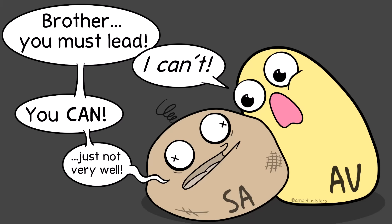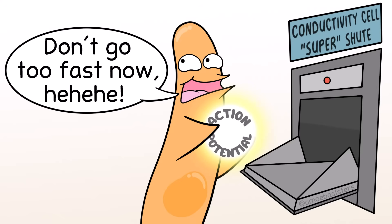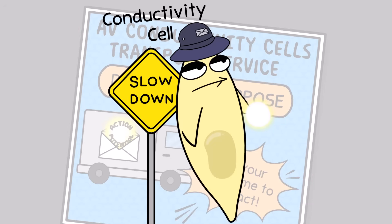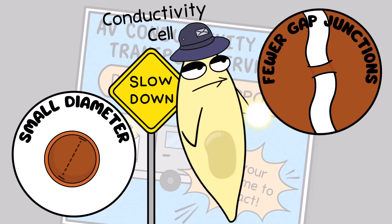In a healthy human heart, the cells in the AV node depolarize in response to the SA node's action. Importantly, the electrical signal travels a little slower through the AV node than the SA node. This slower conduction causes a delay — just a fraction of a second — but that's very significant because the delay allows the atria time to contract and send blood to the ventricles. A major structural contributor to the delay is that conductivity cells in the AV node have a smaller diameter and fewer gap junctions, which slows conduction.